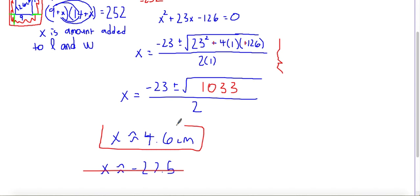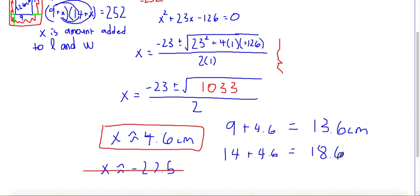So this is the amount we're going to add to both sides. So we started with 9 and 14, so that means the new length would be 9 plus 4.6 which is 13.6 centimeters. And then 14 plus 4.6 is 18.6 centimeters. So these are the new dimensions of painting.